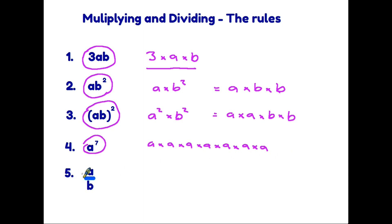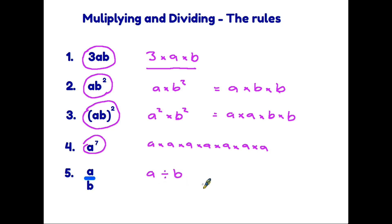Rule five: a over b. This is another algebraic shortcut in that we don't use the divide sign — we put one below the other. So a over b actually means a divided by b.